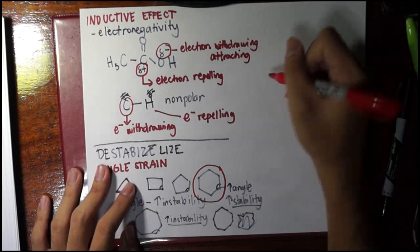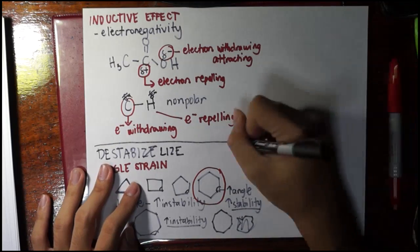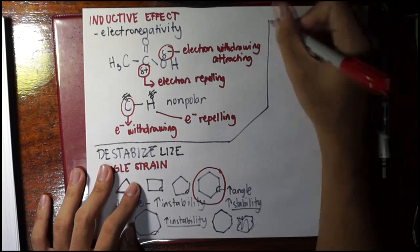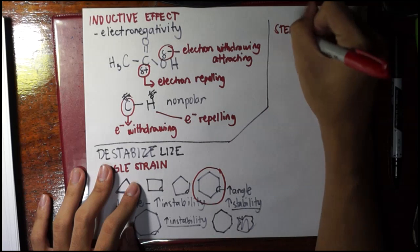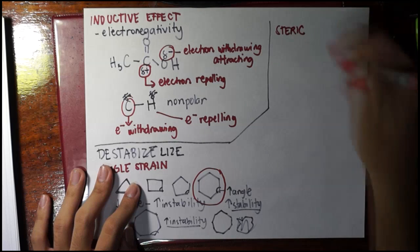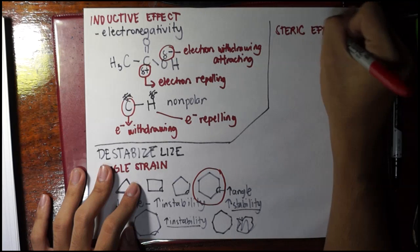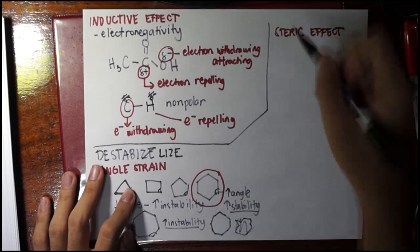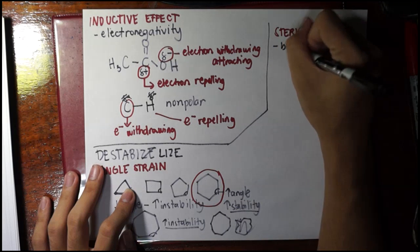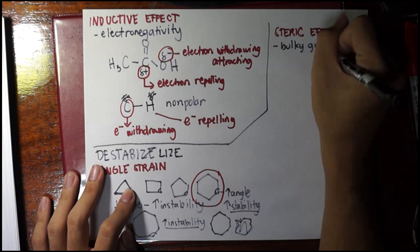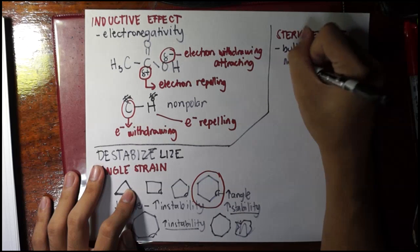Now the next type of strain is called the steric effect, or steric strain, or steric hindrance. I'll just use the word steric effect, and this is a result of bulky groups near each other.